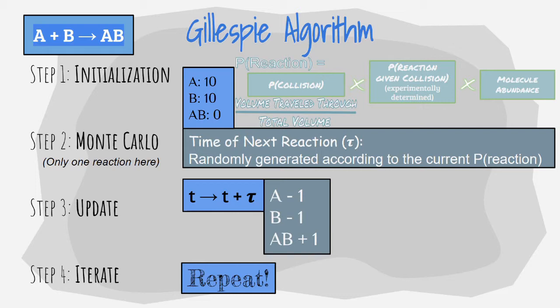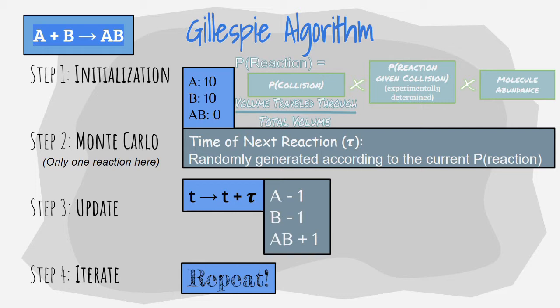Finally, steps 2 and 3 are iterated until the reactants reach 0. The simulation is then run many times to generate a statistically exact result.